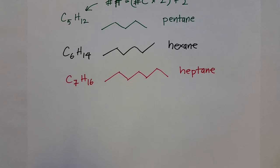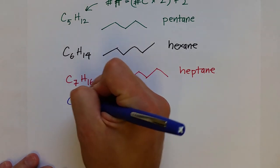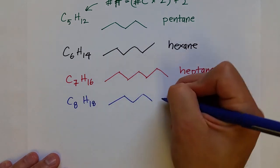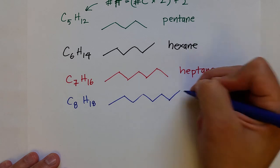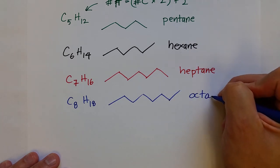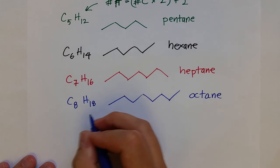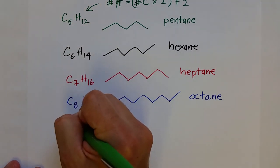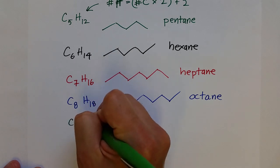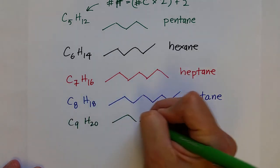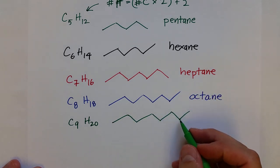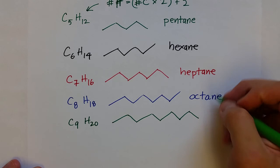We'll go up to ten. C8H18 is octane — one through eight — and that is the primary component of gasoline, this hydrocarbon octane. C9 is nonane — one through nine. Nonane.